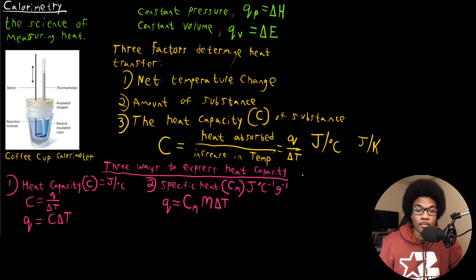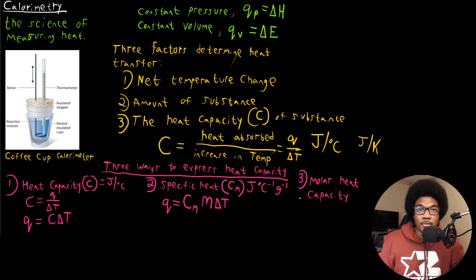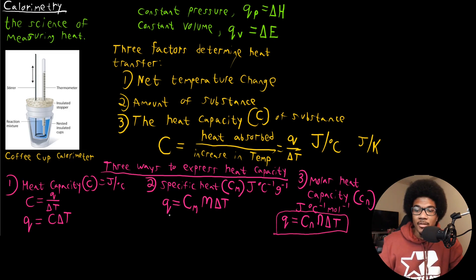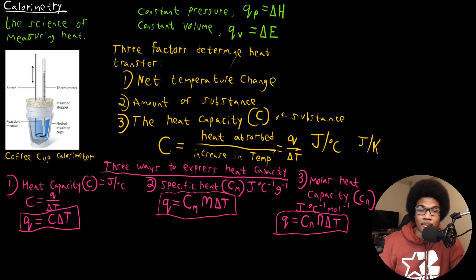The third is the molar heat capacity, denoted C sub N, with units of joules per degree Celsius per mole. To solve for heat transfer, multiply the molar heat capacity by the number of moles of your substance times the change in temperature. All three expressions relate to the same definition: the amount of heat necessary to increase the temperature of your substance by one degree.